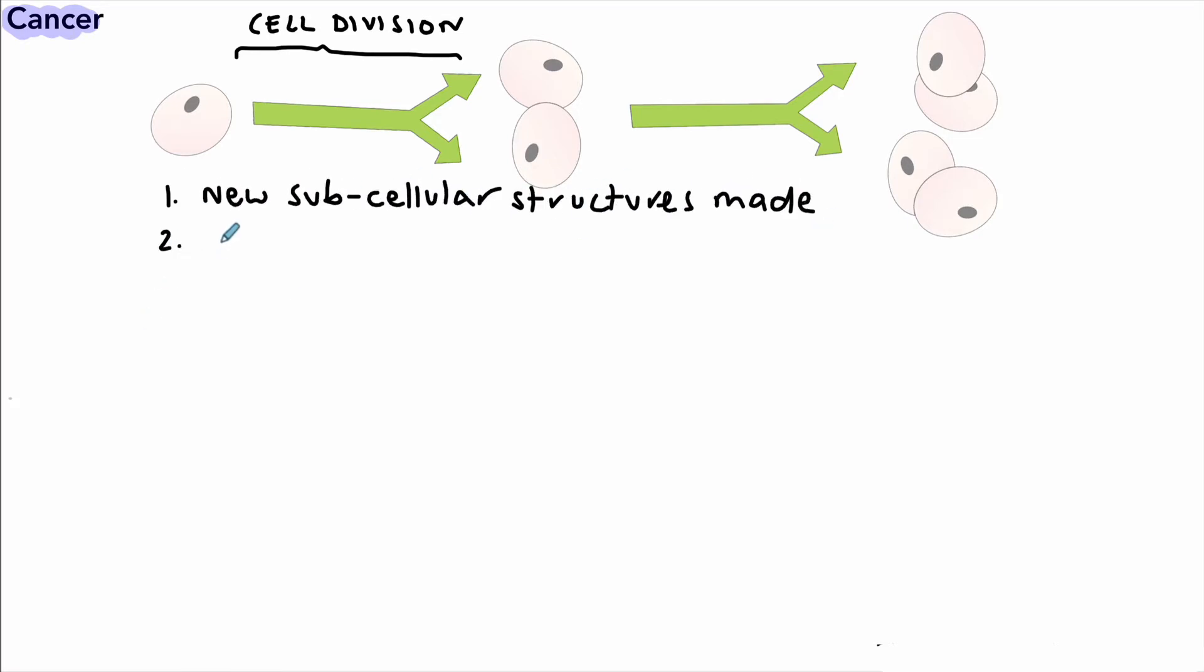So we've got, firstly, in the cell cycle, new subcellular structures made, like ribosomes and mitochondria.